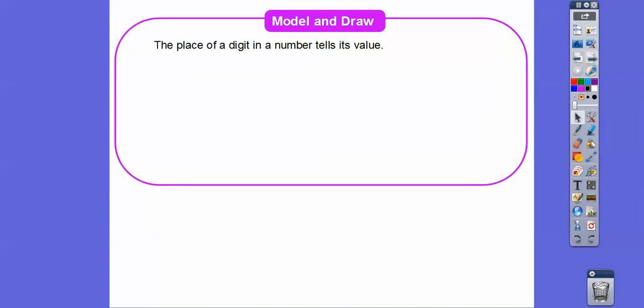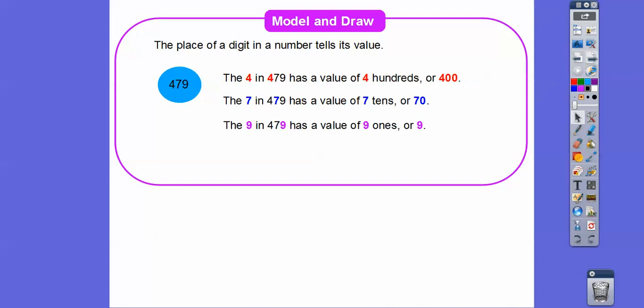So the place of a digit in a number tells its value. So let's talk about this 479. The four in 479 has a value of four hundreds or 400. The seven has a value of seven tens because it's in the tens position. So seven tens is 70. Notice tens only has one zero. Hundreds always has two zeros. And then the nine in the 479 has a value of nine ones or just nine right there.